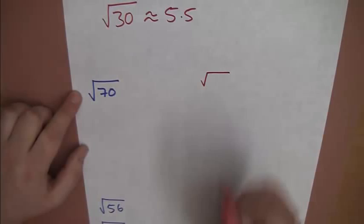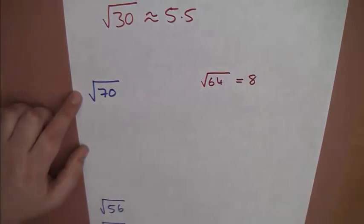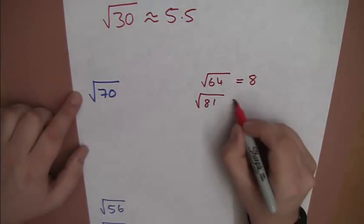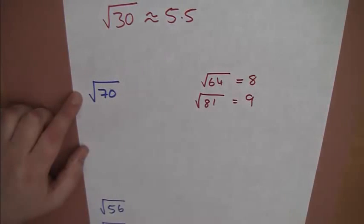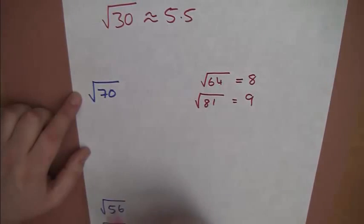my known facts. I know that the square root of 64, which is quite close, is 8. I also know the square root of 81, which is 9. And, is there anything else I know? Well, no. There's nothing closer.